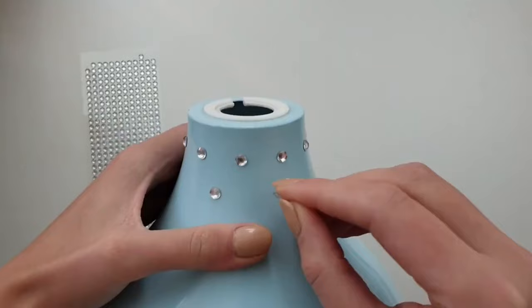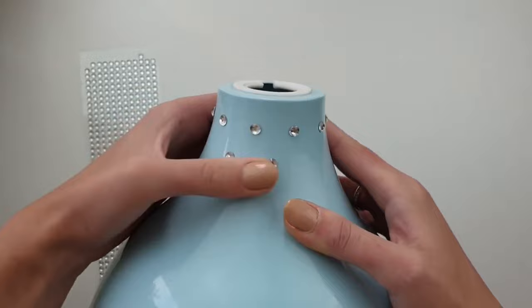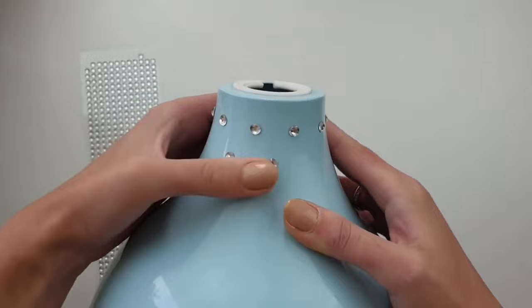Second row of gems I glue lower and between the ones from the first row. I make sure they are glued properly to the surface.